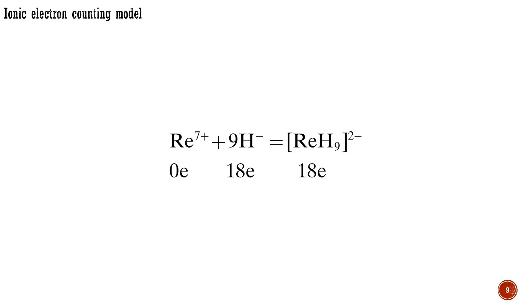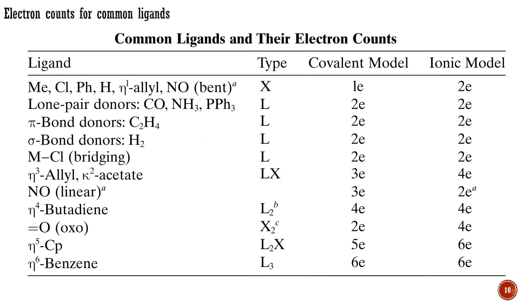This table shows common ligands and their electron counts on both models. Neutral L-type ligands are always 2-electron ligands on either model, whether they are lone pair donors such as carbon monoxide or phosphines, pi-bond donors such as ethylene, or sigma-bond donors such as hydrogen gas.